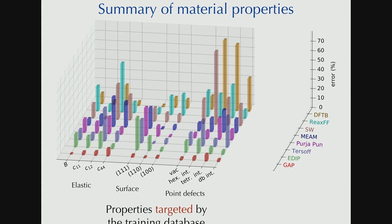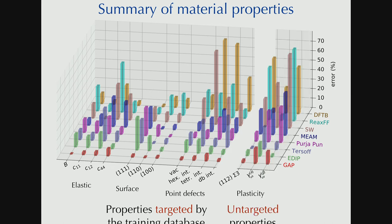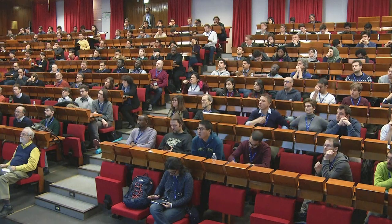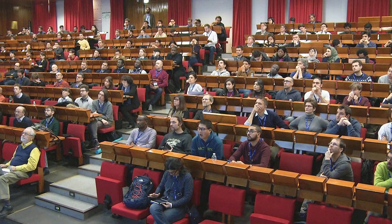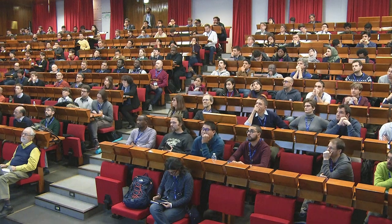This is from earlier. This is just at the end of last year. Here's a bunch of different things you'd like to compute. Elastic constants, surface energies, point defects. Here are the best potentials on the market from Stillinger-Weber to ReaxFF to even a tight binding model. And you can see that really the DFT errors are all over the place. The machine learned model is really very, very good.